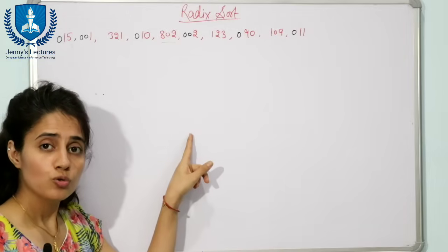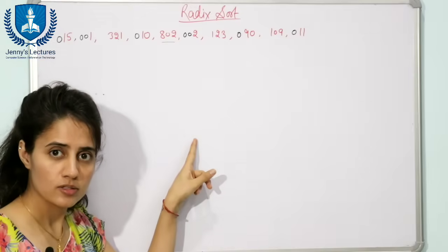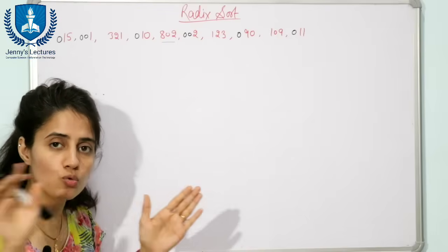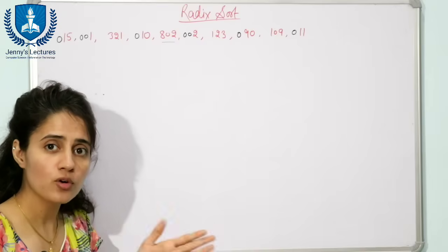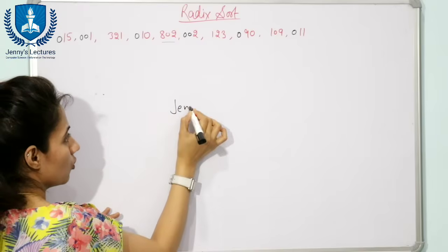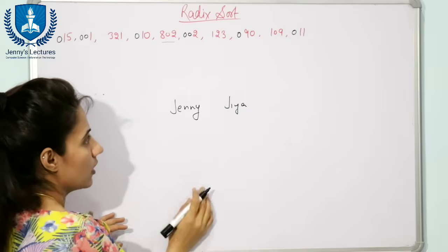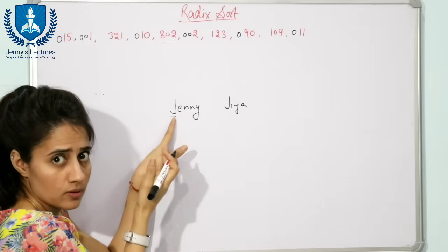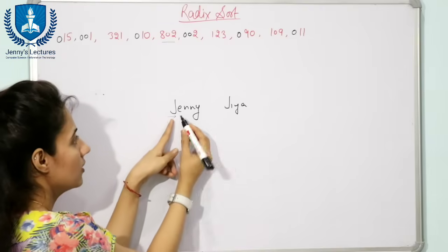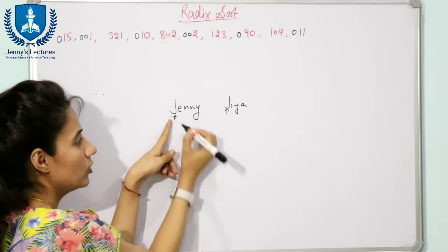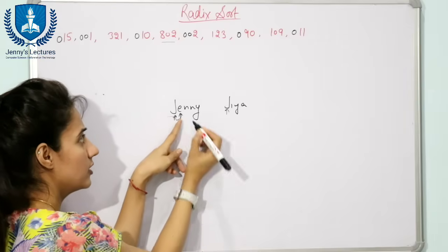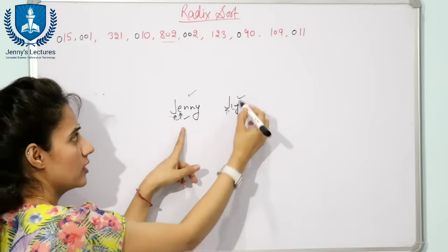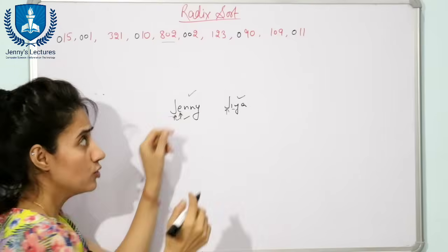This sorting algorithm is also used to sort strings, i.e., alphabets. In that case the base is 26, so we take buckets from 0 to 25. For example, sorting names 'Jenny' and 'Jia': we start from the most significant character. Both start with J, then we compare the next — E versus I. E comes first, so Jenny comes before Jia.